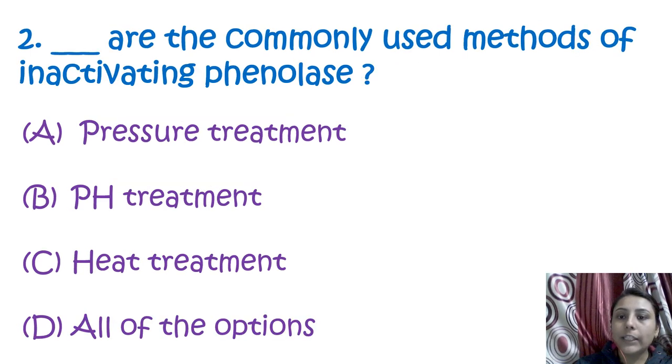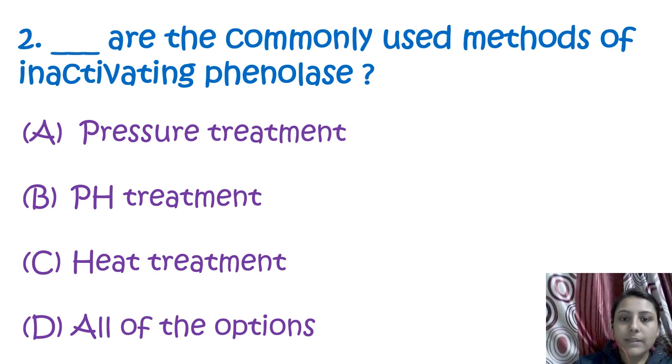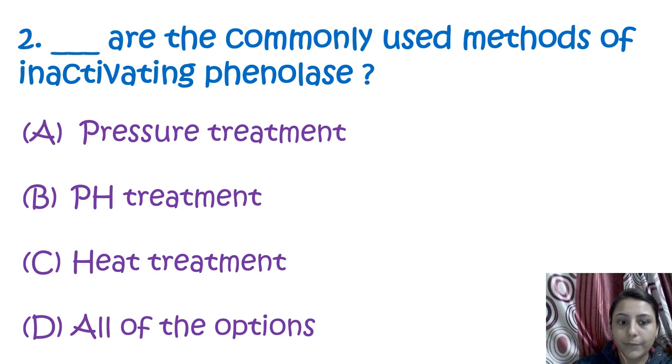The next question asks which are the commonly used methods to inactivate phenolase. The method used to inactivate the phenolase enzyme is heat treatment.